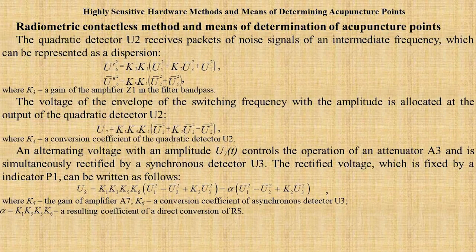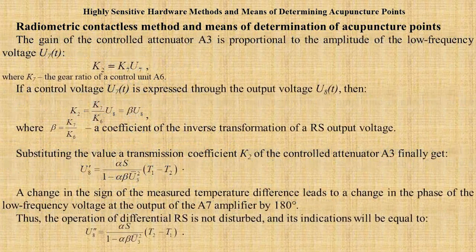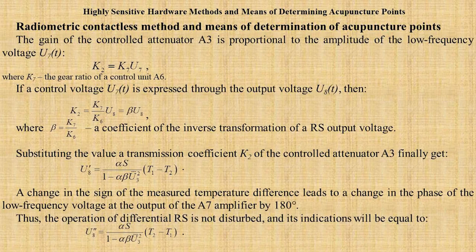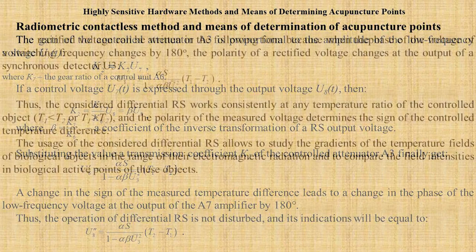The quadratic detector U2 receives packets of noise signals at intermediate frequency, which can be represented as a dispersion. A change in the sign of the measured temperature difference leads to a change in the phase of the low-frequency voltage at the output of the A7 amplifier by 180 degrees.